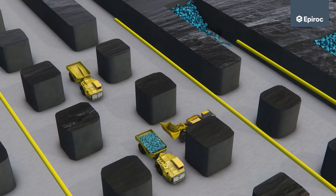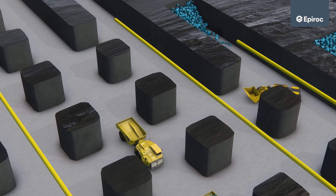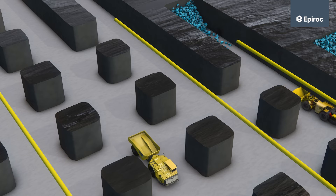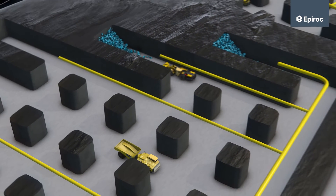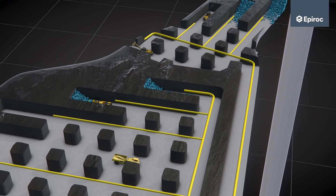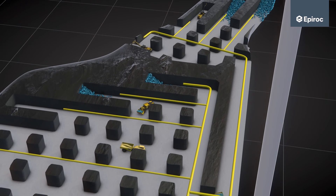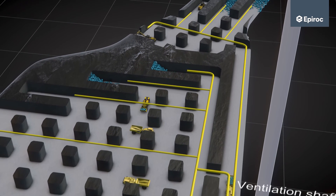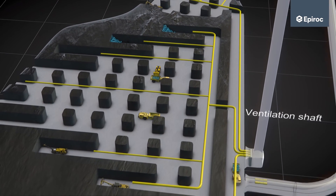As the ore is being mined out, roadways for ore transport and infrastructure are created inside the production area. Working at several production points enables efficient use of equipment, and various transportation methods can be used for transporting ore to surface.